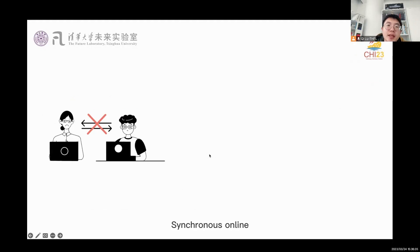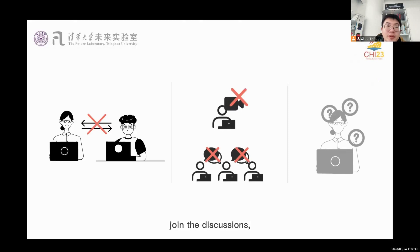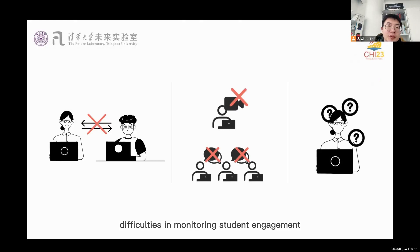Synchronous online classes face many challenges in strengthening the connection between instructors and students. For example, students are reluctant to turn on their cameras and join the discussions, and instructors also face difficulties in monitoring student engagement.